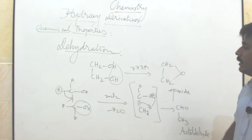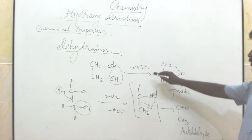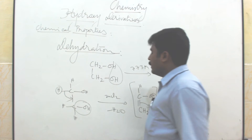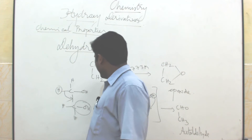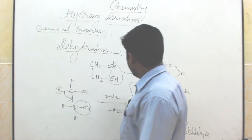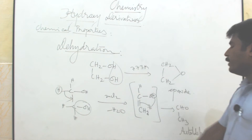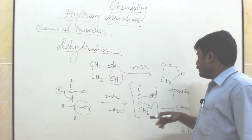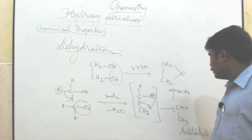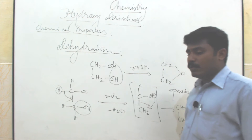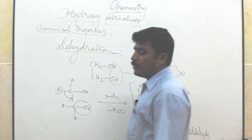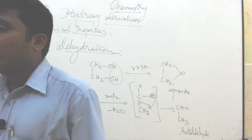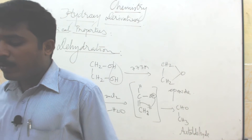So initially, when heating ethylene glycol at 773 Kelvin, you get ethylene epoxide. Then heating in the presence of anhydrous zinc chloride gives an unstable intermediate compound, followed by a rearrangement reaction, giving the acetaldehyde molecule. The formula for acetaldehyde is CH3-CH2O.